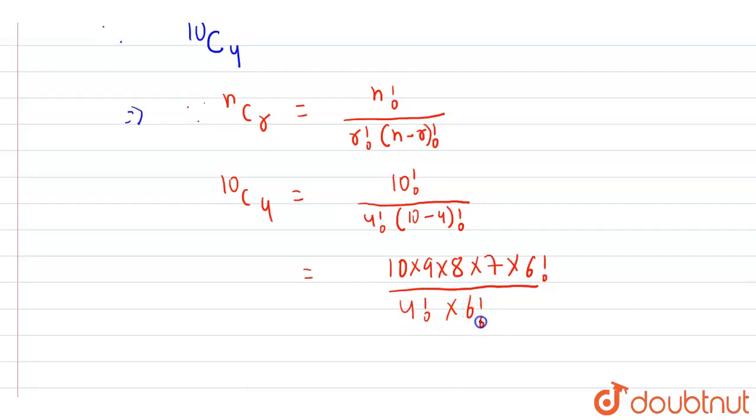So 4 factorial into 6 factorial. And we can clearly see that we can cancel out 6 factorial with 6 factorial, right?